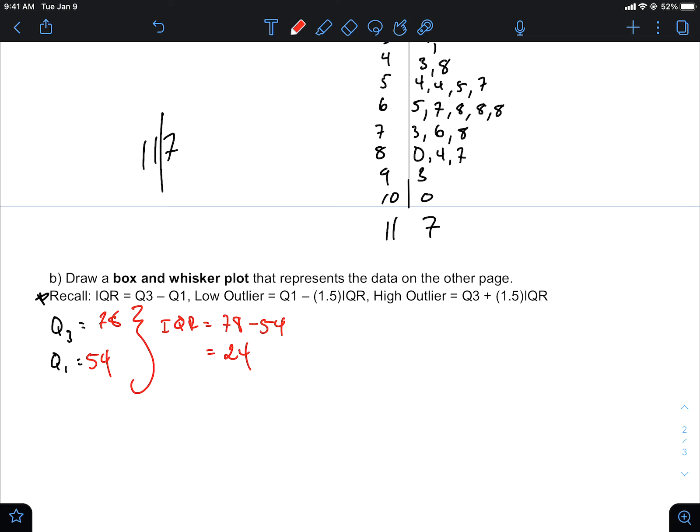And then just to check, I also put the low outlier just so that you guys can see whether or not you're going to have any outliers. You're going to have the low outlier to be Q1, which is 54, take away 1.5 times 24, which you'll find to be 18. So anything lower than 18 is going to be an outlier to the data set. And then your high outlier is going to be 78 plus 1.5 times 24, and you'll find that to be 114. So it looks like based on the data, everything within our data set, nothing's an outlier. It all falls within the normal ranges.